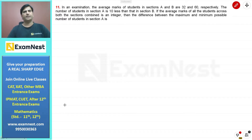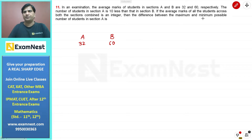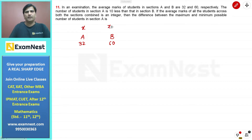A question on allegation and mixtures: In an examination, the average marks of students in Section A and B are 32 and 60 respectively. The number of students in Section A is 10 less than that in Section B. Suppose there are x students in Section A, then Section B has x plus 10 students.